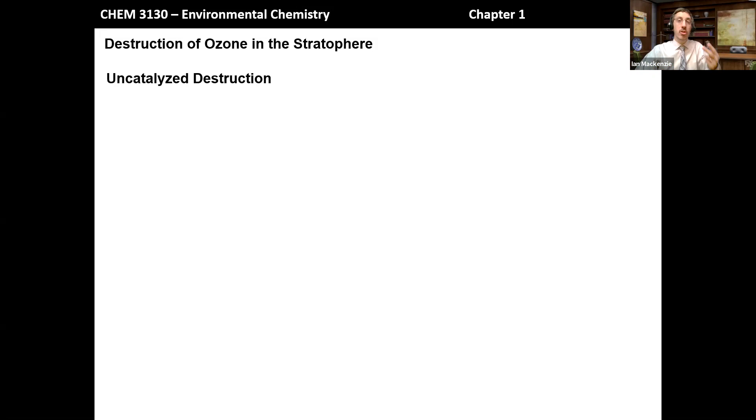So what exactly is going on here? We've got two main pathways for uncatalyzed destruction of ozone. The major pathway is a simple photochemical dissociation of ozone. Ozone absorbs a photon of light, generally in the UVB region - that's where its absorption is greatest, so less than 320 nanometers, although presumably it could also absorb in the UVC region. This causes dissociation of the molecule to generate an O2 molecule in its excited state and an oxygen atom in its excited state.